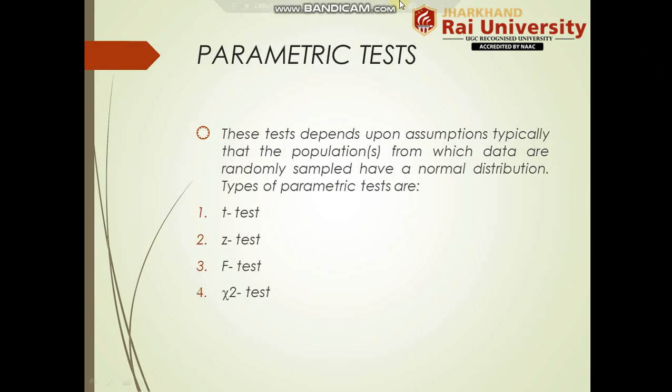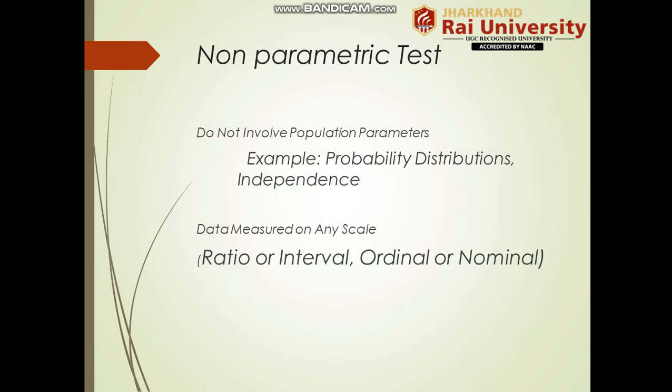Parametric tests depend on assumptions — typically that the populations from which data are randomly sampled have a normal distribution. The types of parametric tests are: t-test, z-test, f-test, and chi-square test. Non-parametric tests do not involve population parameters. Examples include probability distribution, independence, and data measured on any scale — ratio, interval, ordinal, or nominal.